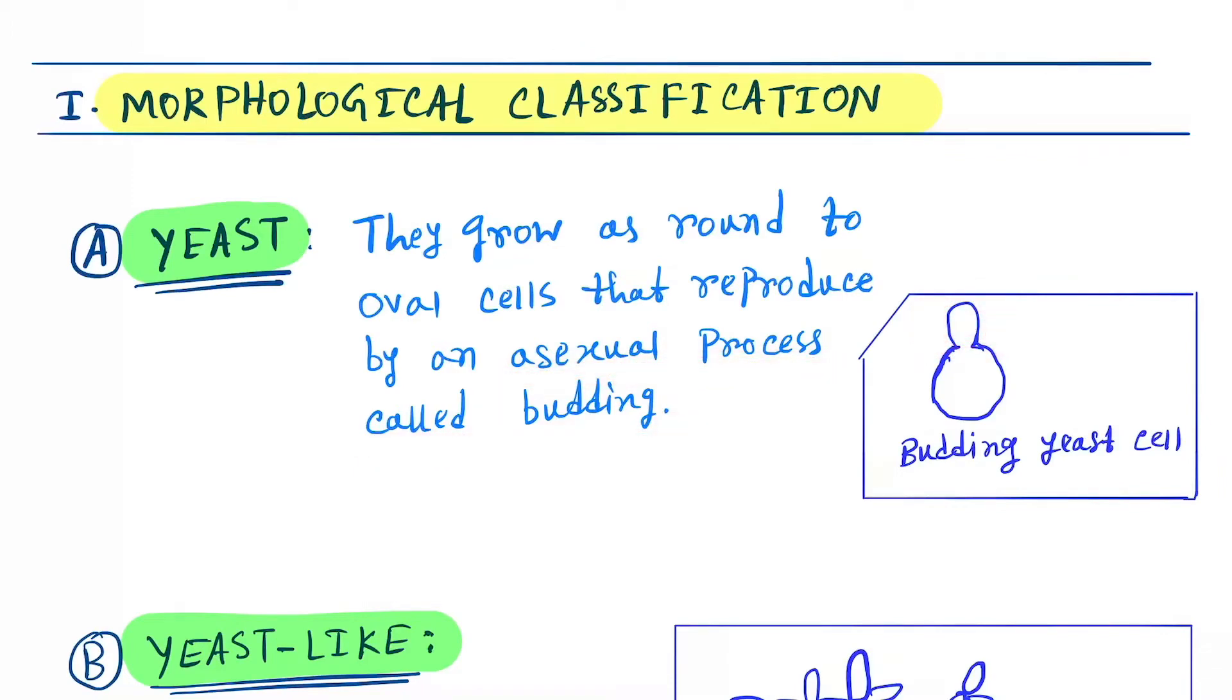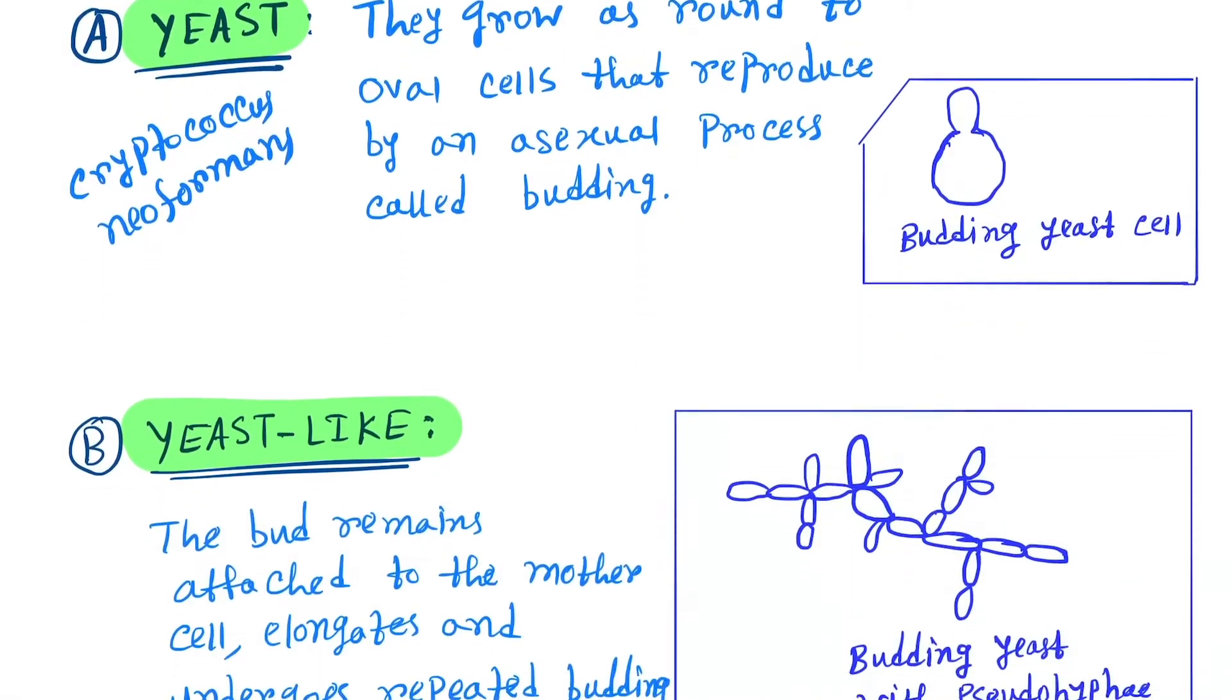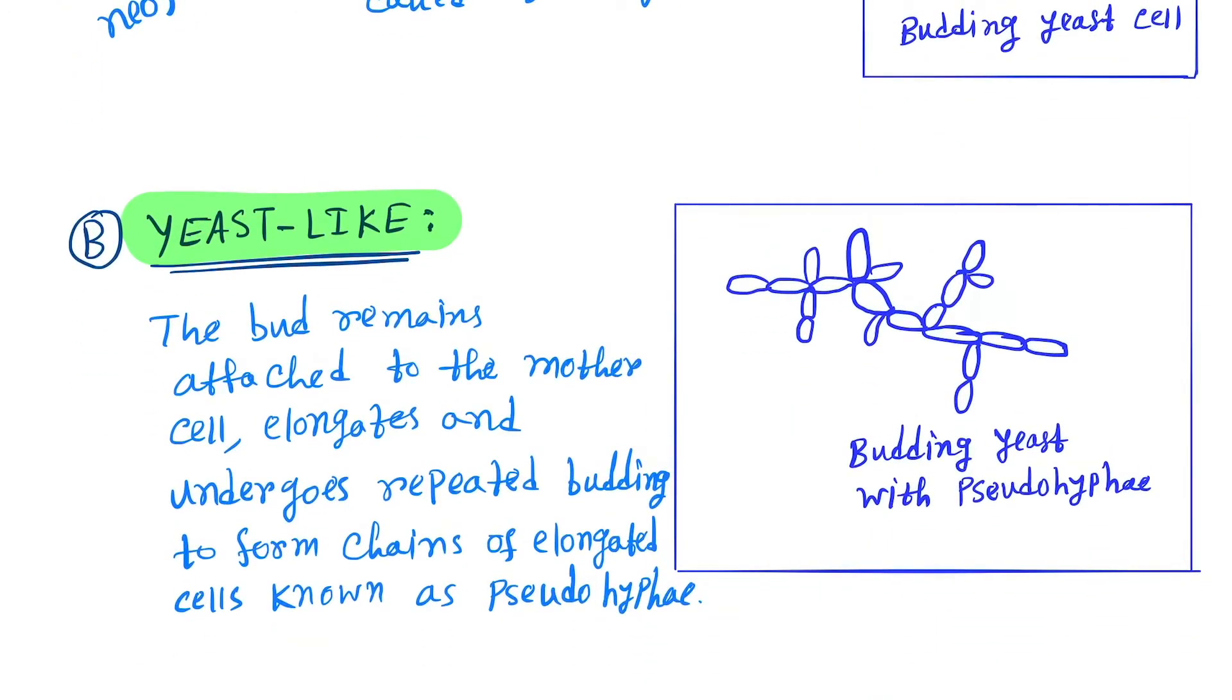They form buds. The examples are Cryptococcus neoformans. Next, the bud remains attached to the mother cell, elongates, and undergoes repeated budding to form chains or elongated cells known as pseudo-hyphae. Here you can see this is the pseudo-hyphae - elongated from the mother cell.